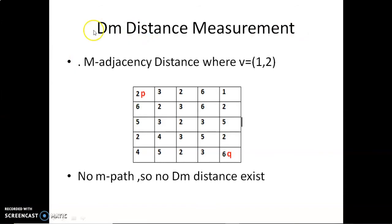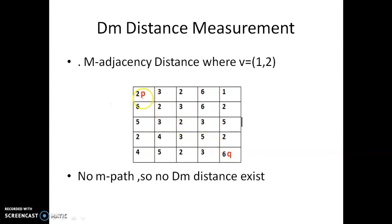Now for Dm (M-adjacency) distance measurement. Only Dm distance requires the set V. Here, V = {1, 2}. In D4 or D8 distance, there is no need for a V value. Using V, we find the path between p and q. Moving horizontally, the pixel value is 3 — but 3 is not in V, so it is a dissimilar pixel and we can't move that way.